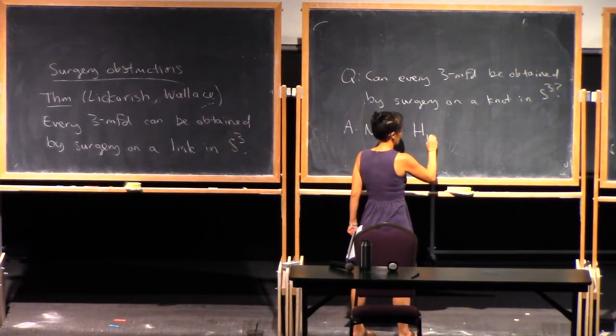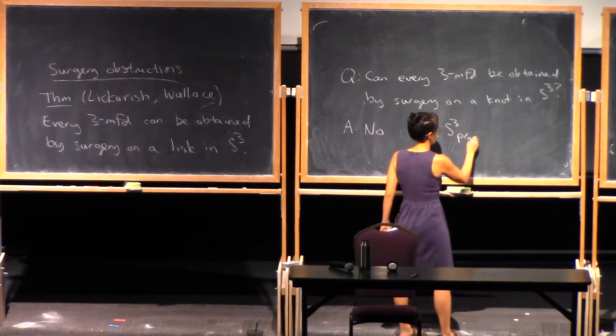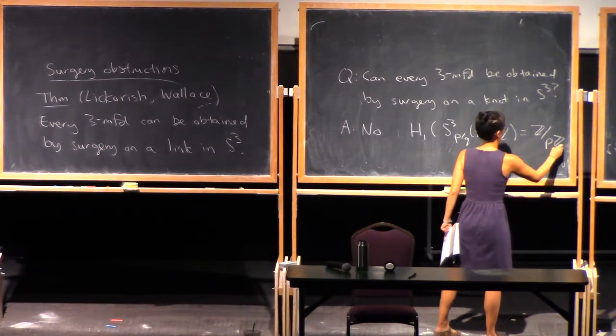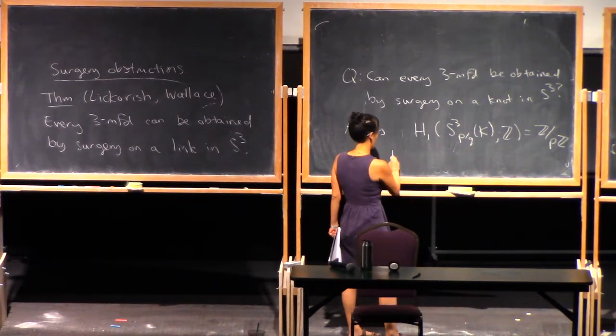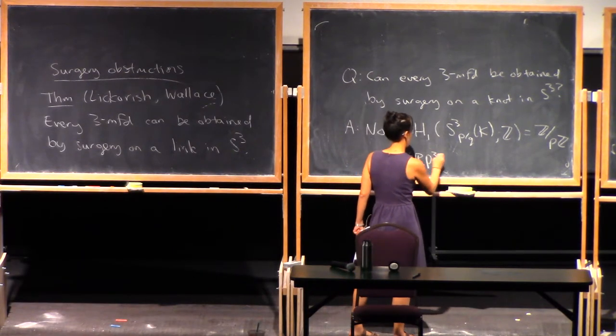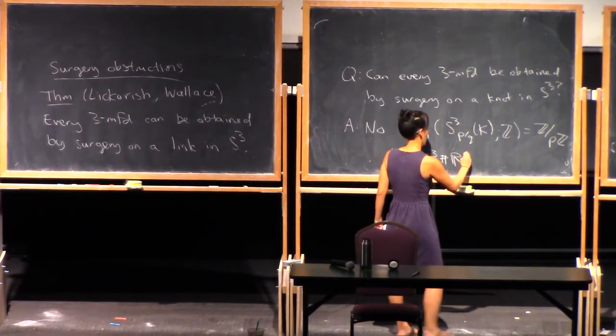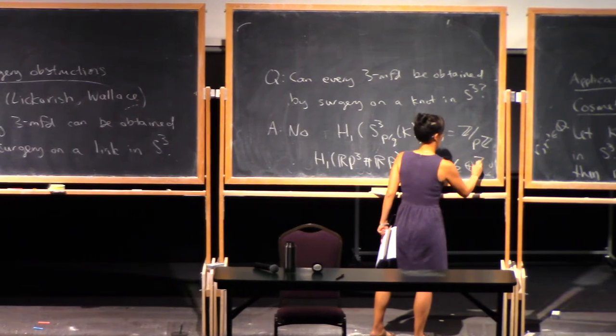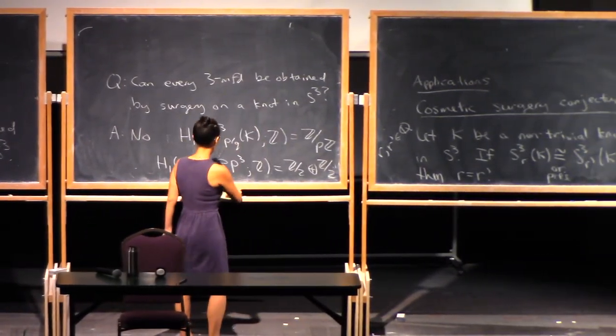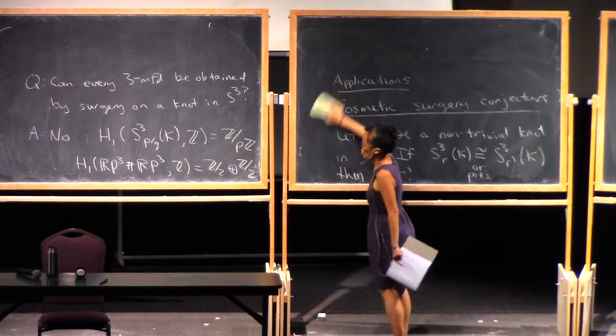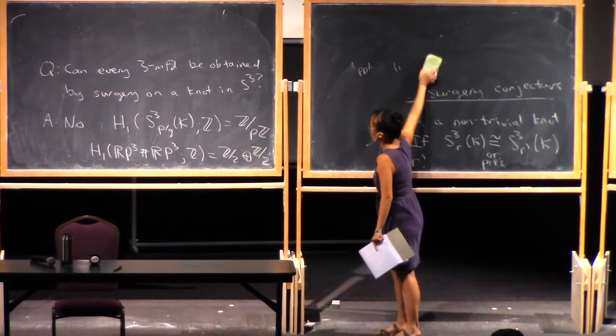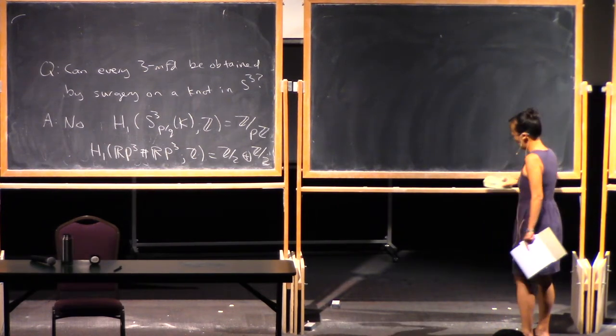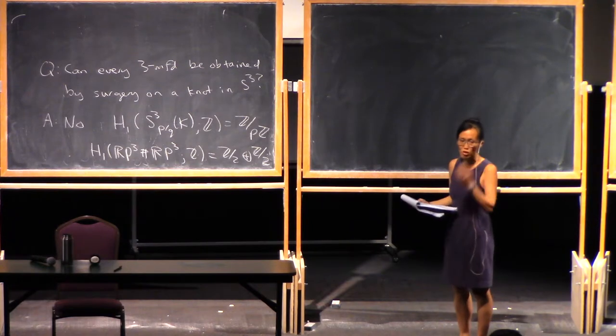So note that H1 of P over Q surgery on K is cyclic. So in particular, if you have a three-manifold with H1 not cyclic, so for example, RP3 connect sum RP3, this cannot be obtained by surgery on a knot because its first homology is not cyclic. Okay, but what if you only look at three-manifolds for which this obstruction vanishes, i.e., what if you only look at homology spheres? Can you obstruct a homology sphere from being surgery on a knot? And in fact, one can.